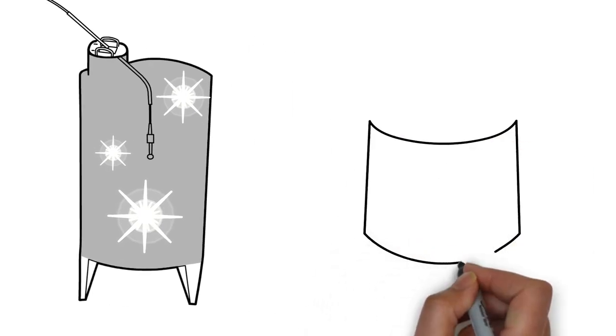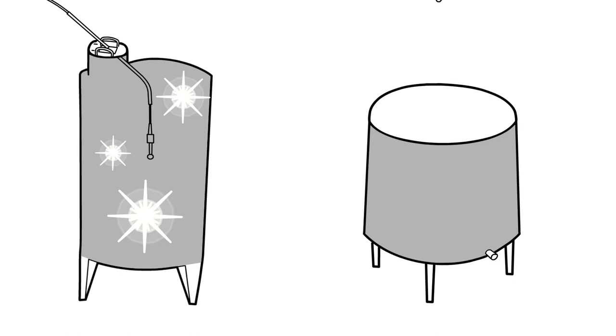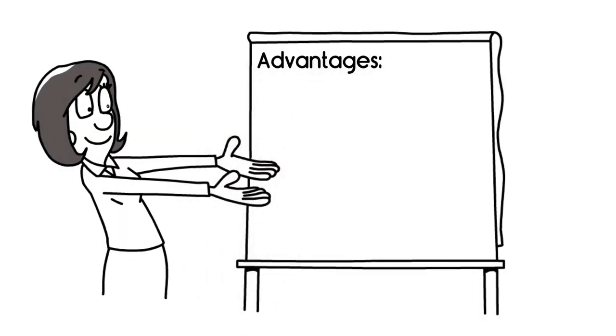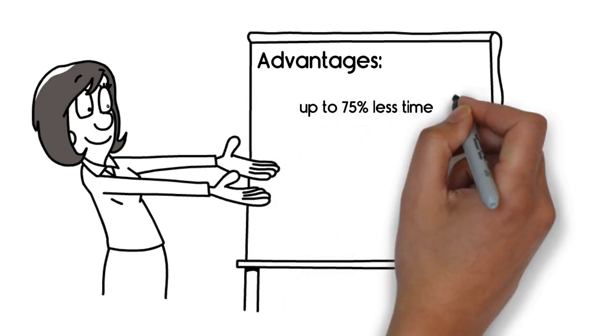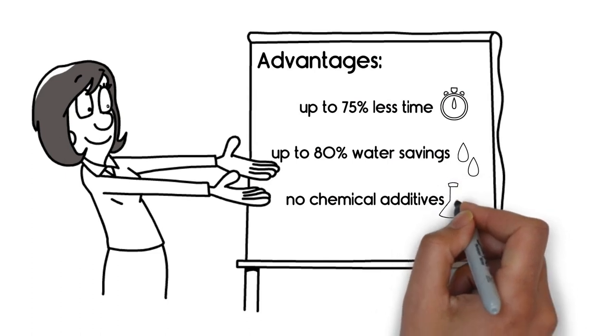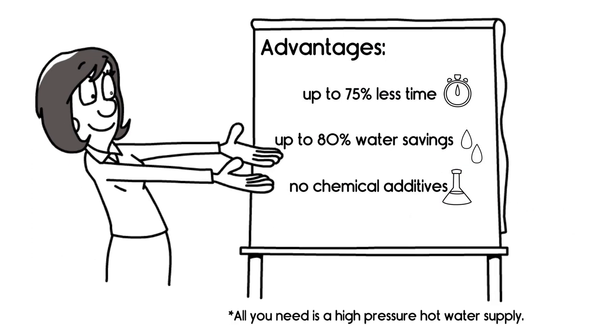Mulk Cleaning Systems offers appropriate mounting options for almost all tank formats. The advantages of our cleaning systems are obvious: up to 75% less time, up to 80% water savings and no chemical additives. All you need is a high-pressure hot water supply.